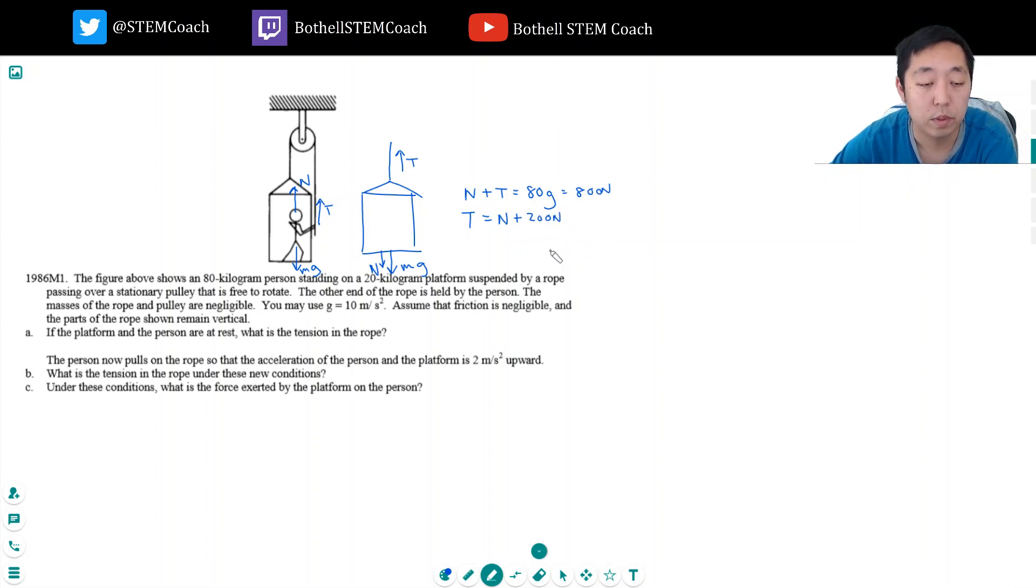So if I solve for N here, this one tells me N equals 800 minus T and I'm going to plug it into here. And so T is equal to 800 minus T plus 200, or 2T is equal to 1000, or T is equal to 500 newtons.